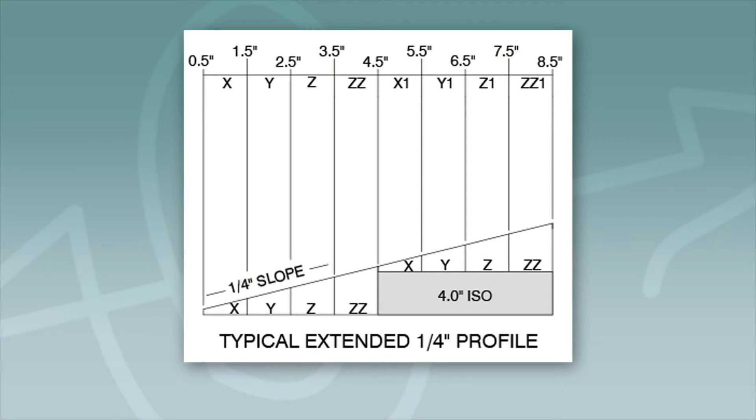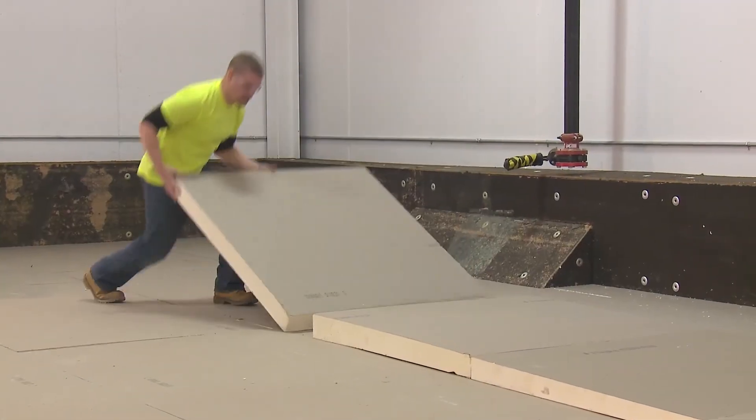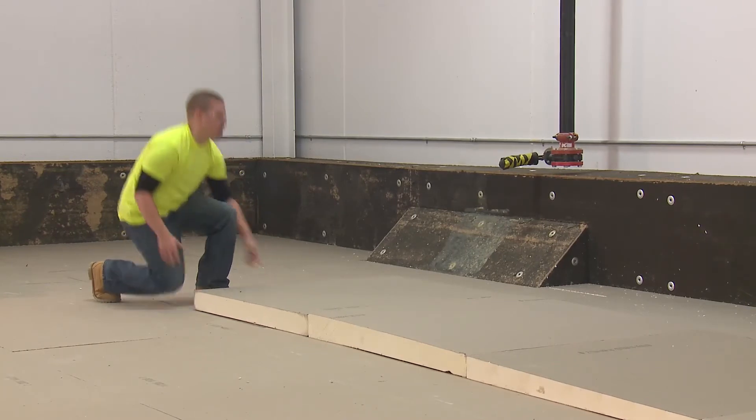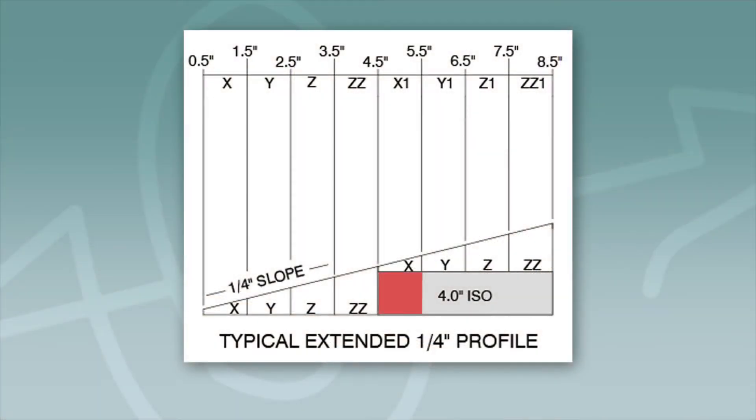Once the ZZ panel is laid down, it is time to do a panel repeat. We take a 4 inch piece of poly-ISO and lay it down against the last panel of the first panel sequence. In all instances, when you begin a panel repeat, you will notice your fill will not match up to the top of your previously laid panel. This space is for the first panel of your panel repeats, in this case an X panel.